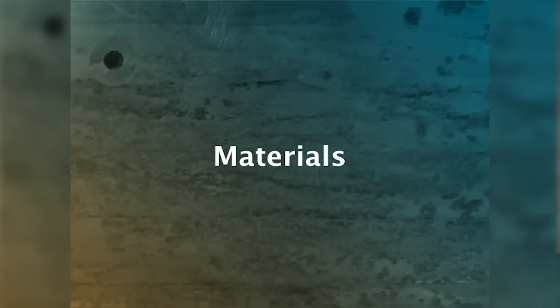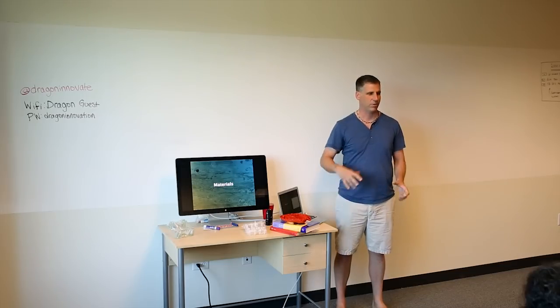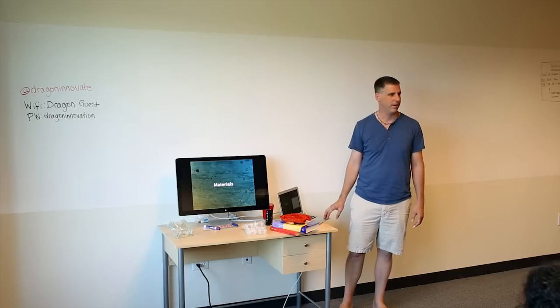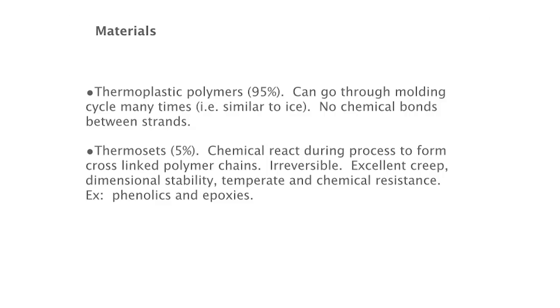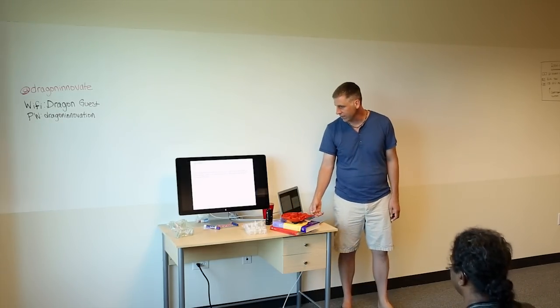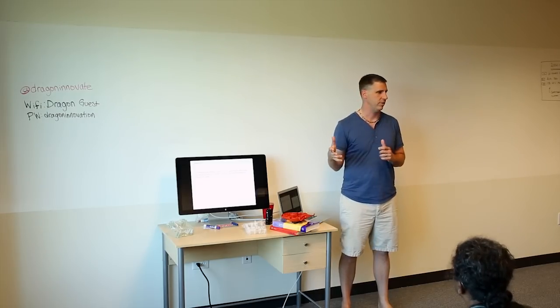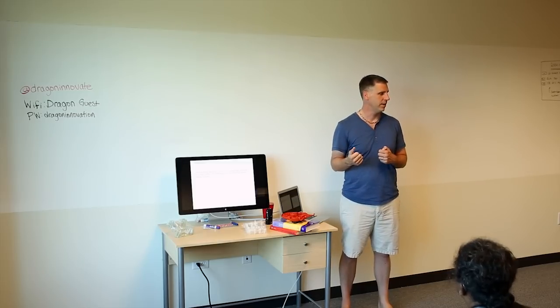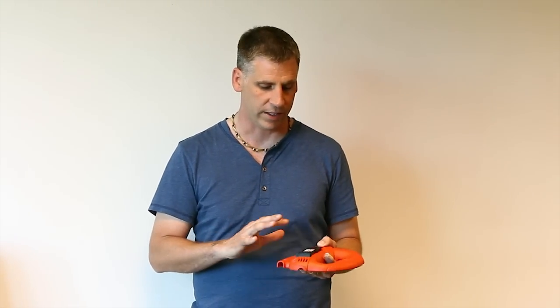Moving to materials — we typically use thermoplastics, which is about 95% of what you'll use. The trick with them is they can go through the process many times, like ice you can freeze and thaw repeatedly. Thermosets only get one cycle because they chemically bond. These thermoplastic polymers are long chains that typically don't bond chemically to each other, which is why you can mold, grind, dry, and remold them. Over time regrinding will slightly affect chemical properties and introduce contaminants, so regrind is never as good as virgin material.